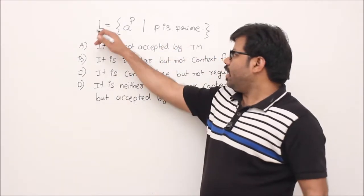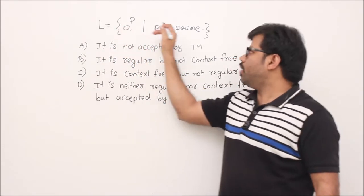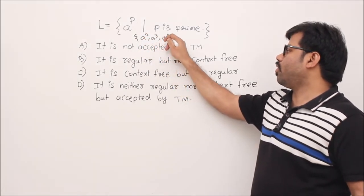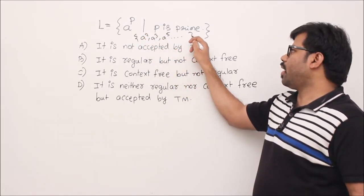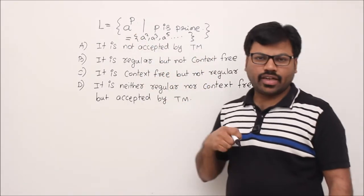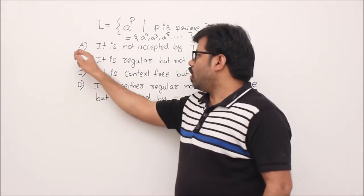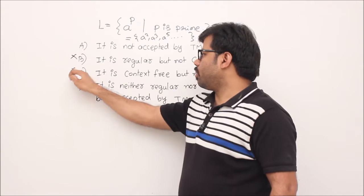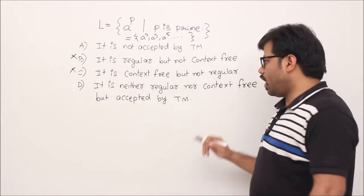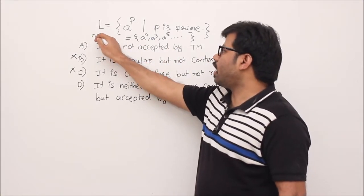Now consider the language L equal to the collection of strings of the form a^p where p is a prime number — for example, a², a³, a⁵. The number of a's must be prime. We already know this language is neither regular nor context-free, so option B (regular) is wrong and option C (context-free) is wrong.